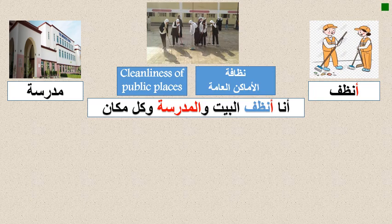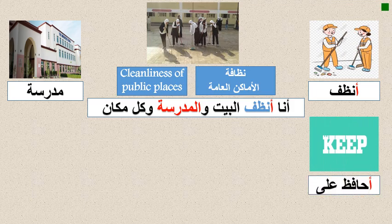وكل مكان means 'and everywhere' — like the playground, the bus, any place. So the full sentence is: أنا أنظف البيت والمدرسة وكل مكان — meaning: I clean the house, the school, and every place.